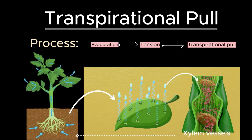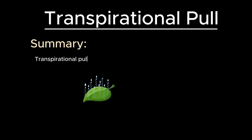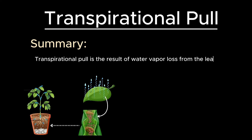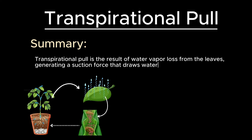This continuous column of water molecules is maintained due to the cohesive and adhesive properties of water. In essence, transpirational pull is the result of water vapor loss from the leaves, generating a suction force that draws water upward through the plant.